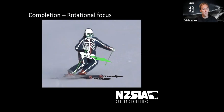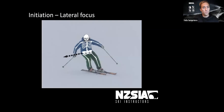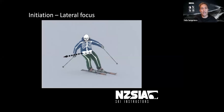Moving on to initiation. You may have noticed we've changed the skier — we want to share the love. Looking at the pelvis and its relationship to the base of support in the initiation, you can already see that the pelvis has started to move away from the base of support in the direction of that arrow. The pelvis will continue to move further away from the base of support through the initiation phase of the turn. This is helping to tip the skis up, to gain some edge angle and some early grip during that initiation phase.